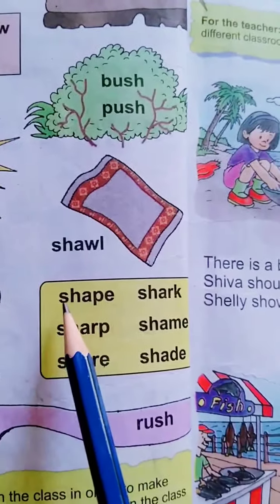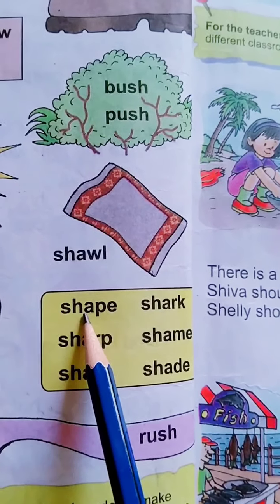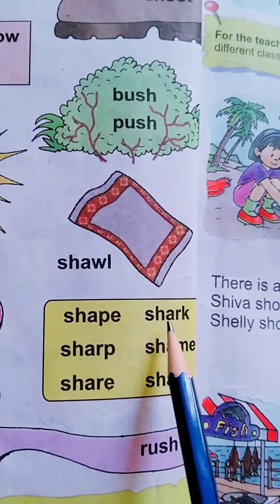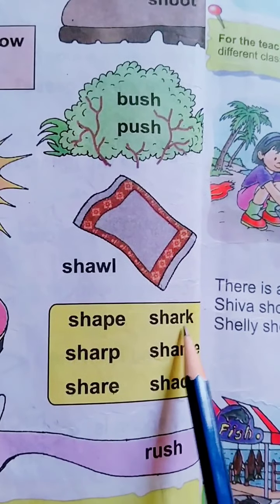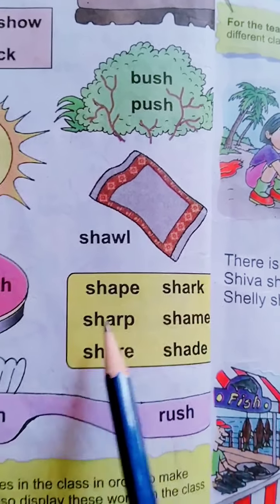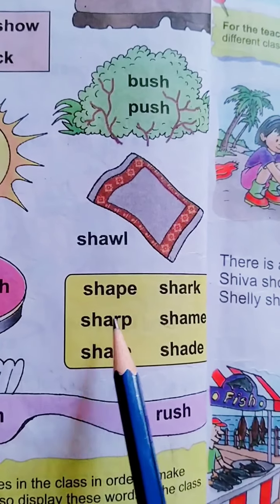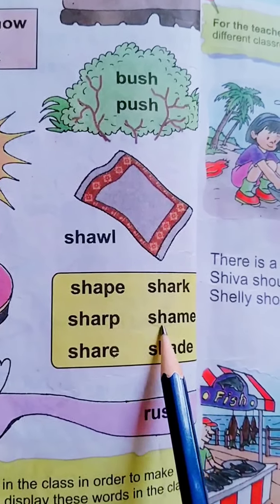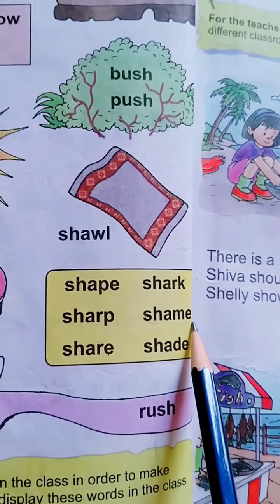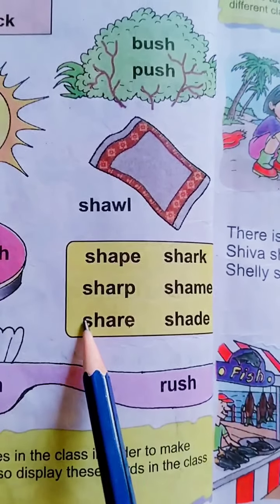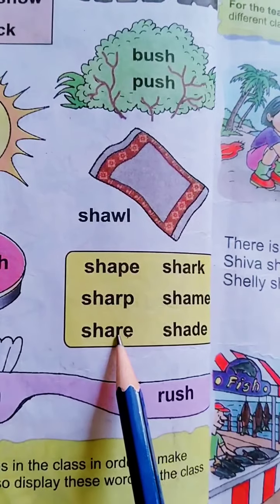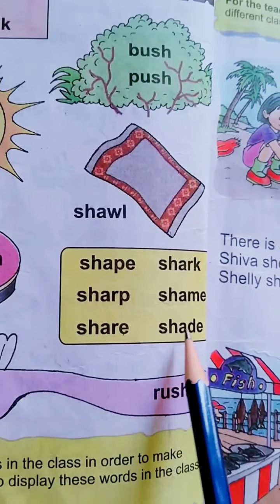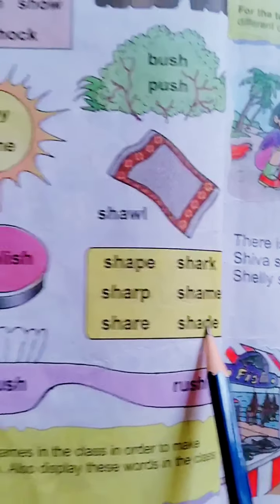Next word is S-H-A-P-E: Shape. S-H-A-R-K: Shark. S-H-A-R-P: Sharp. S-H-A-M-E: Shame. S-H-A-R-E: Share. S-H-A-D-E: Shade.